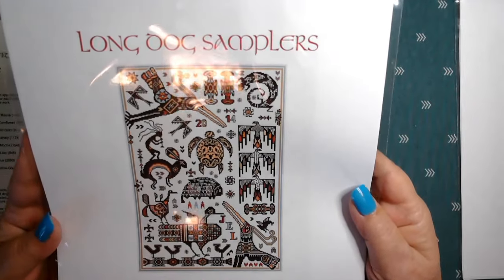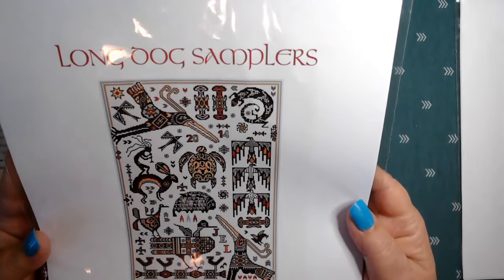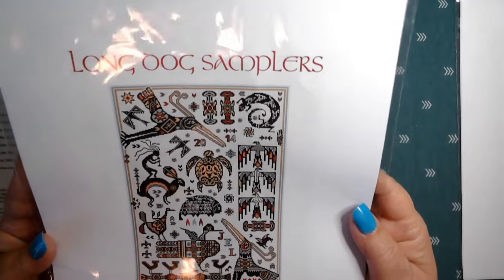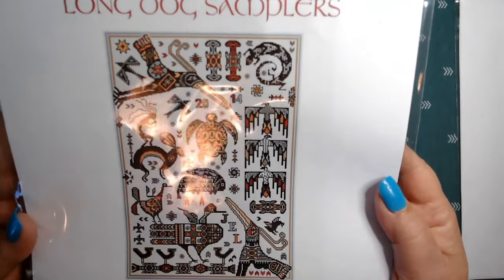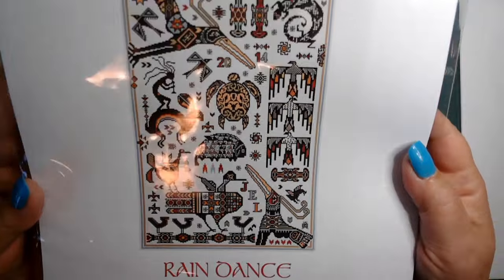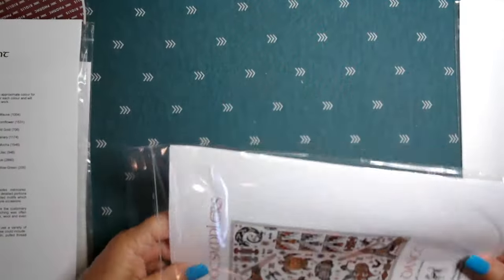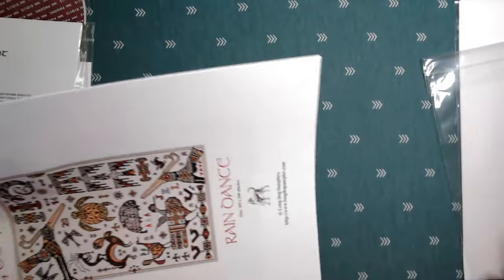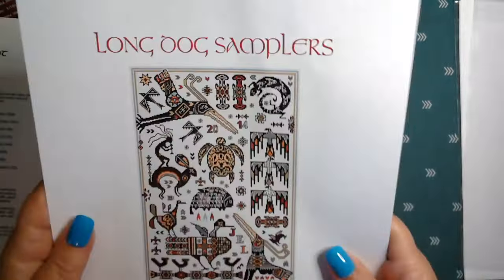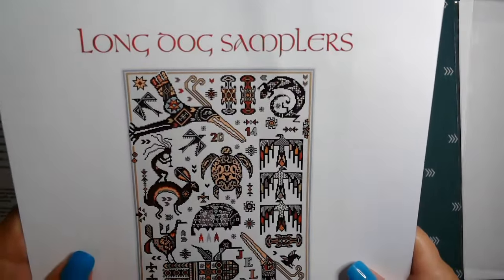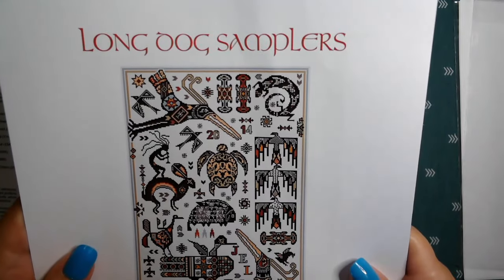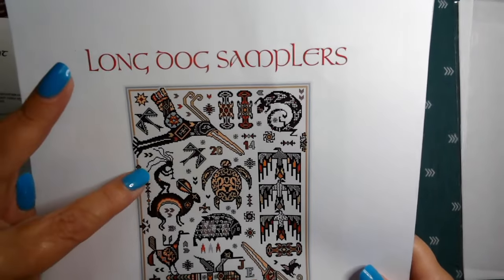And then I have another one here. This is called Rain Dance by Long Dog Samplers. 203 stitches by 296. Let me take this out so we don't have the glare. And I will be starting one of these in January. I would like to just get the holidays over.